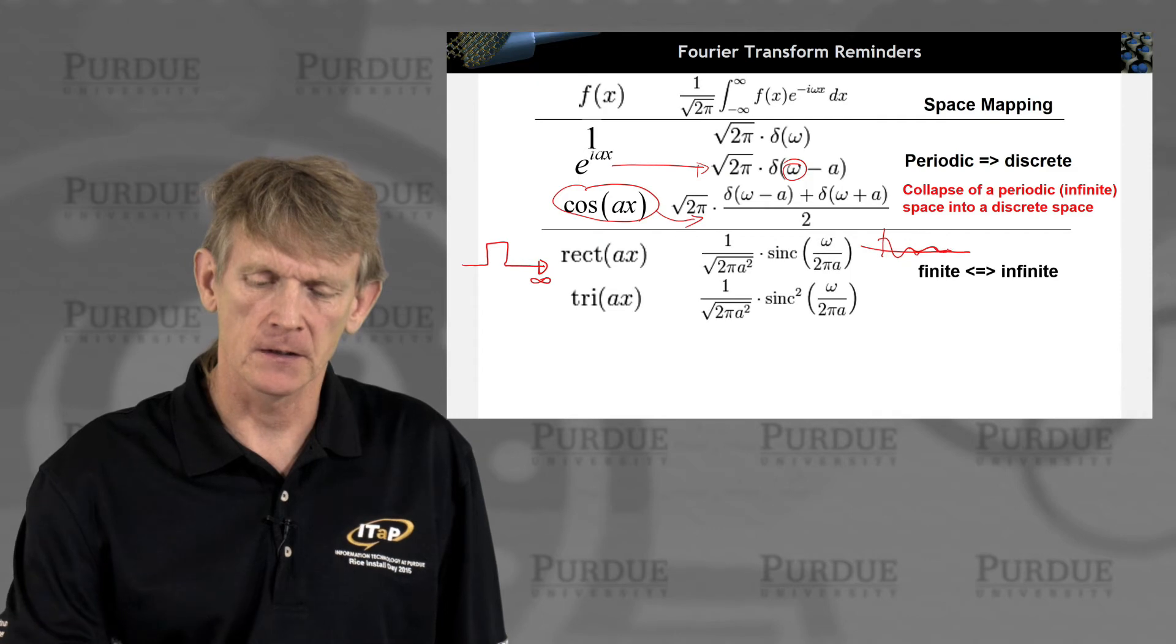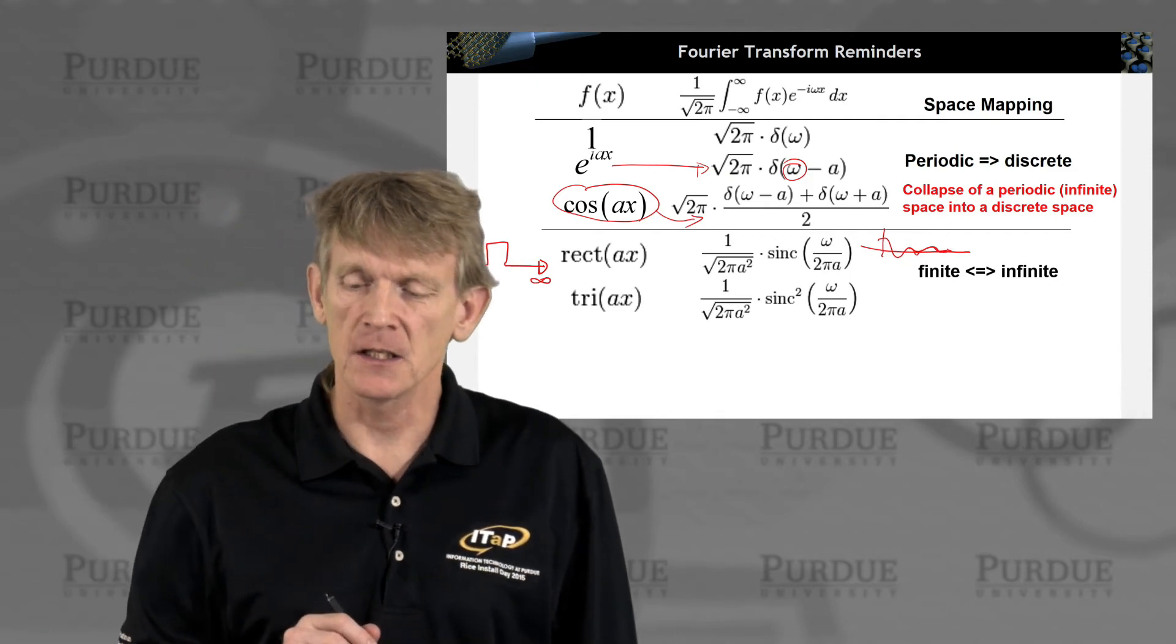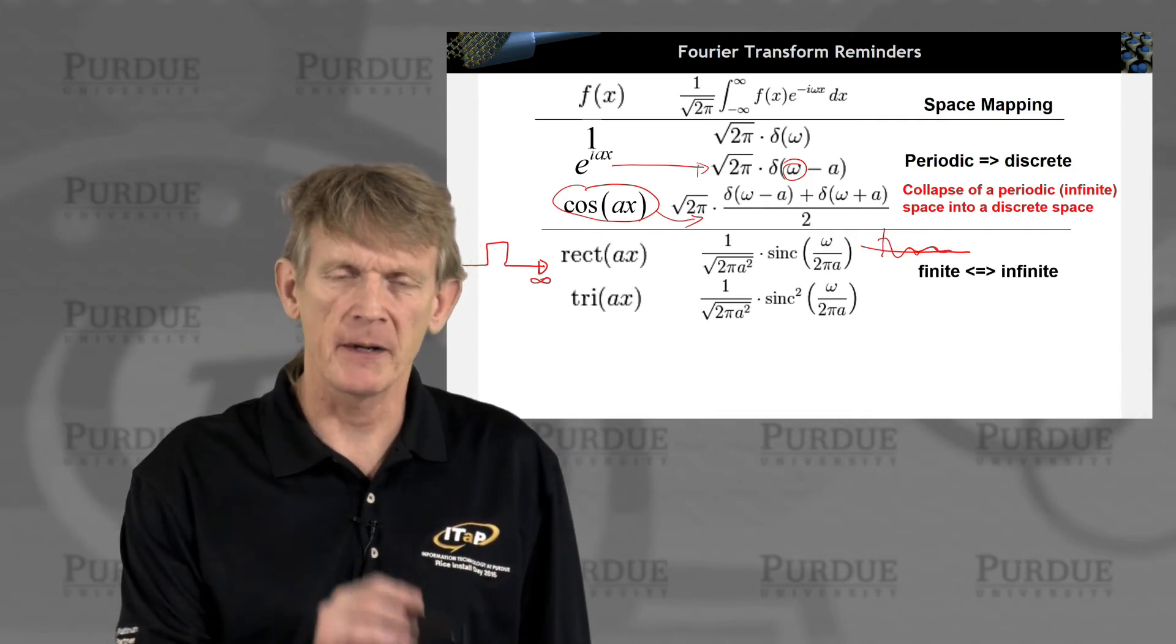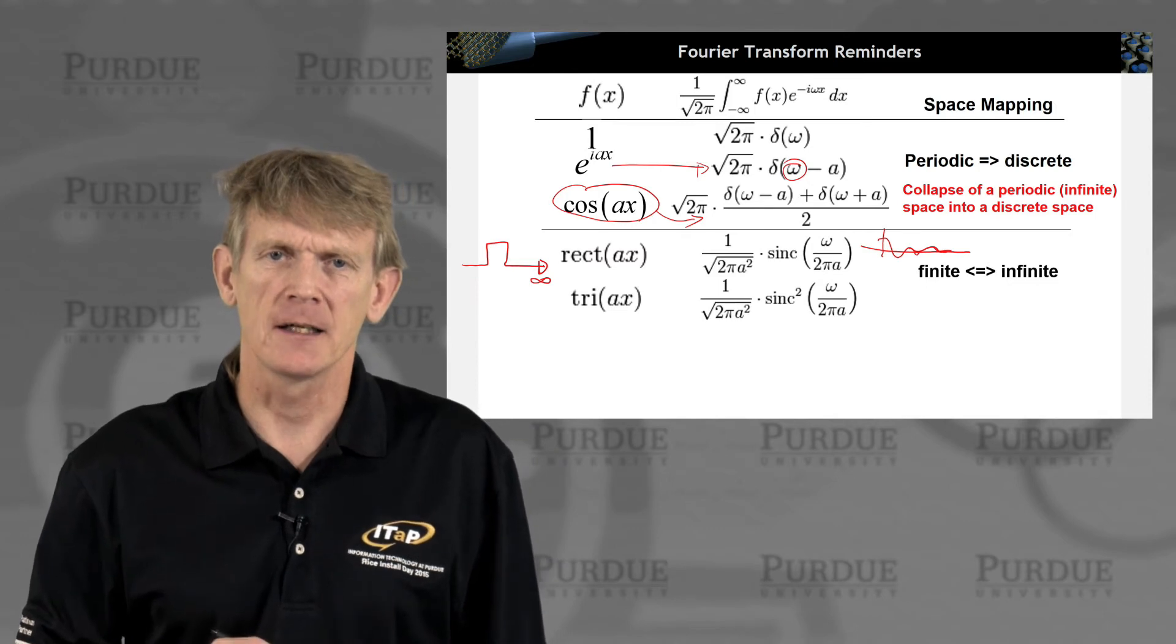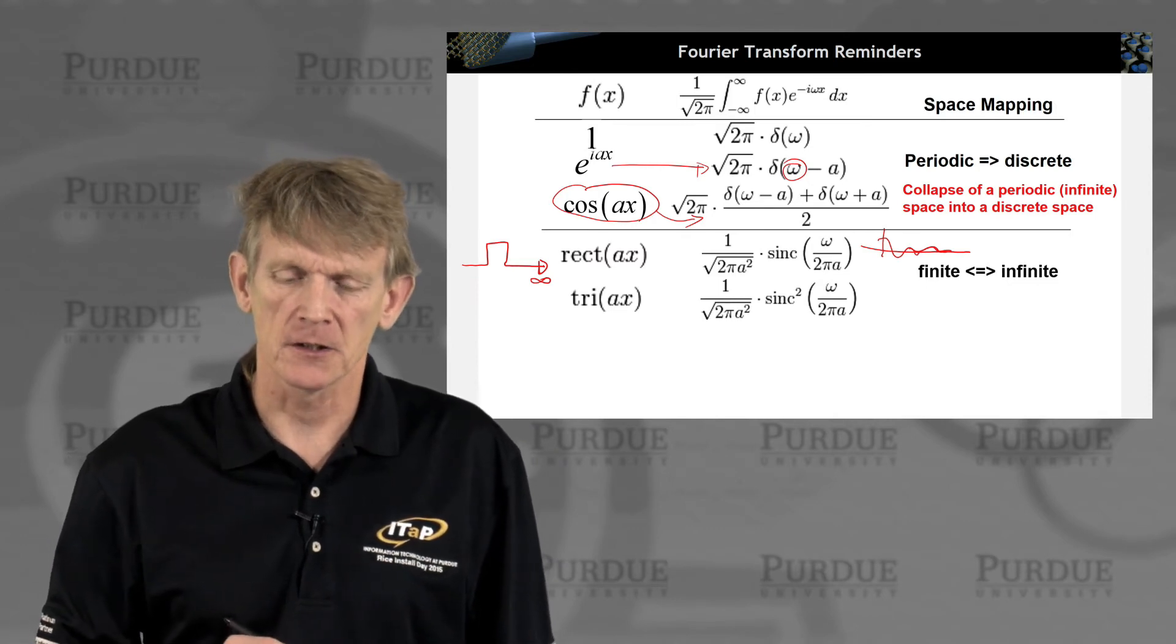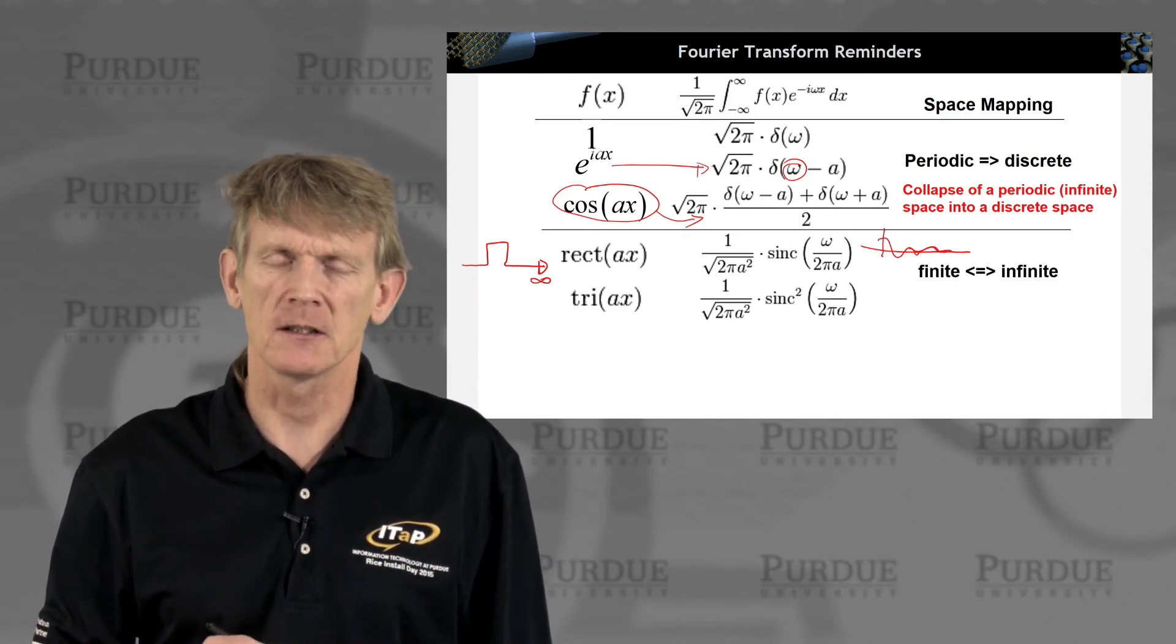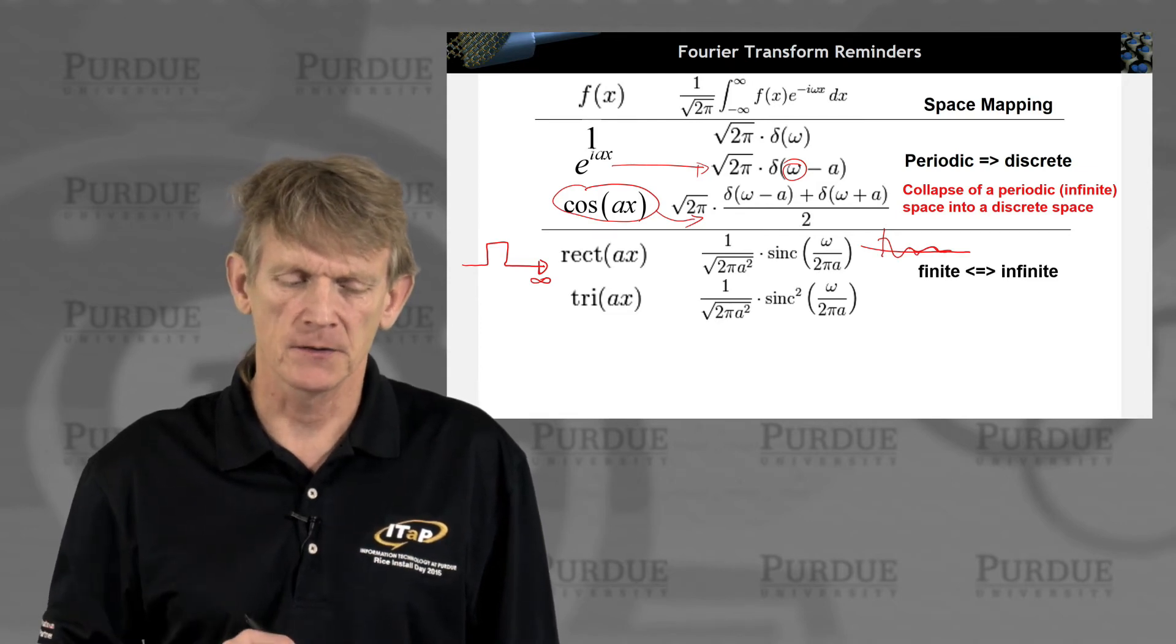Of course, it goes down like this, but it is infinite in space. So this spatially finite function gets mapped to an infinite extent function in sinc in the Fourier space.